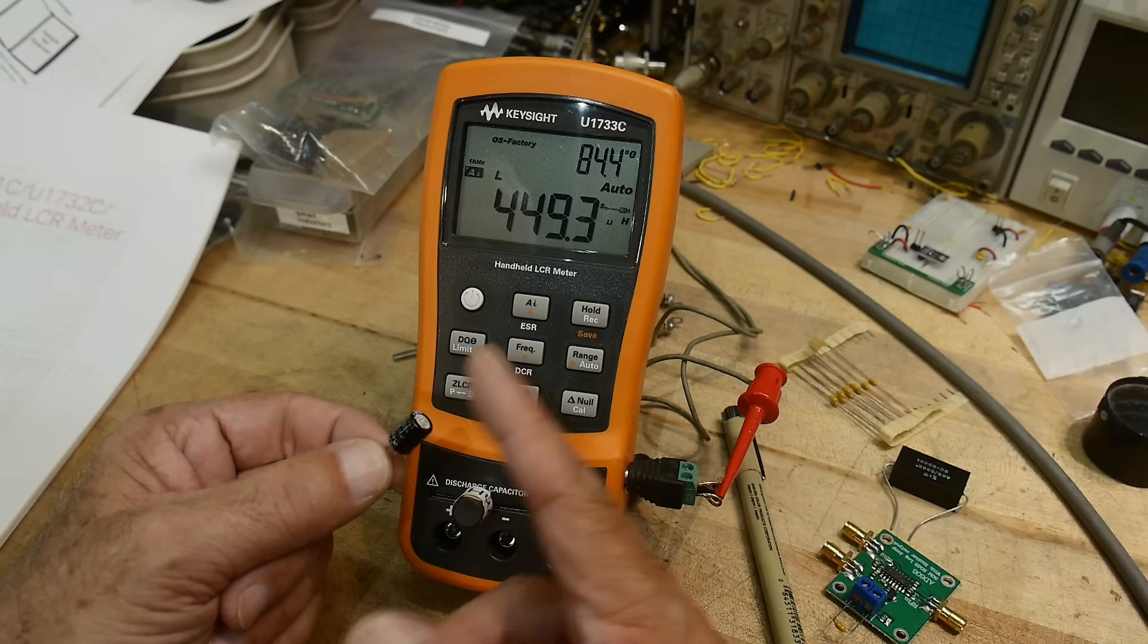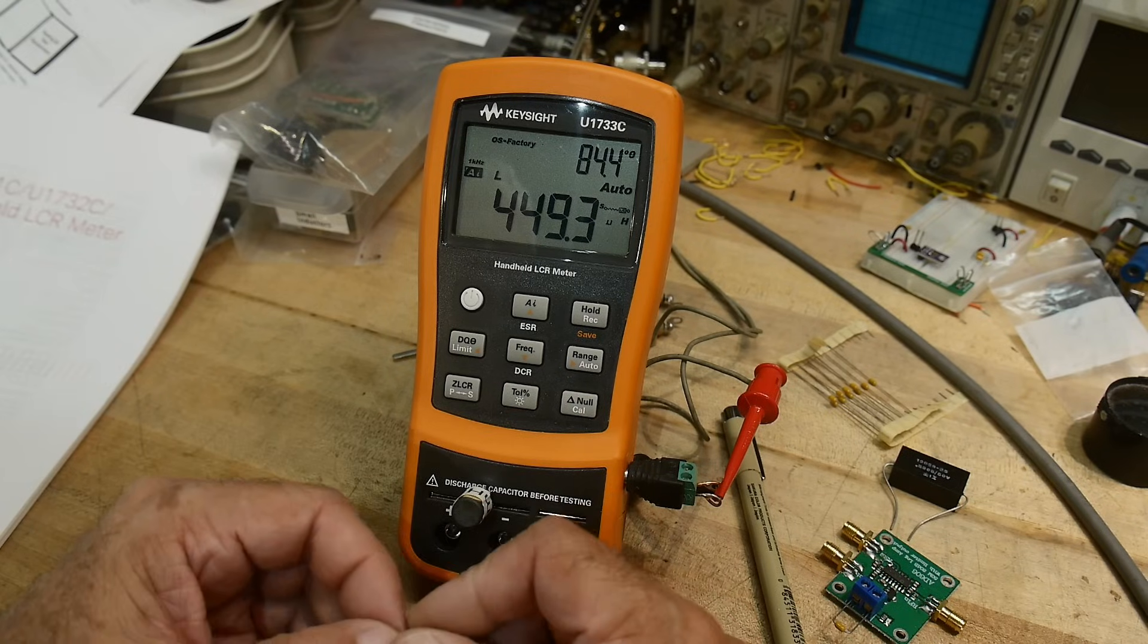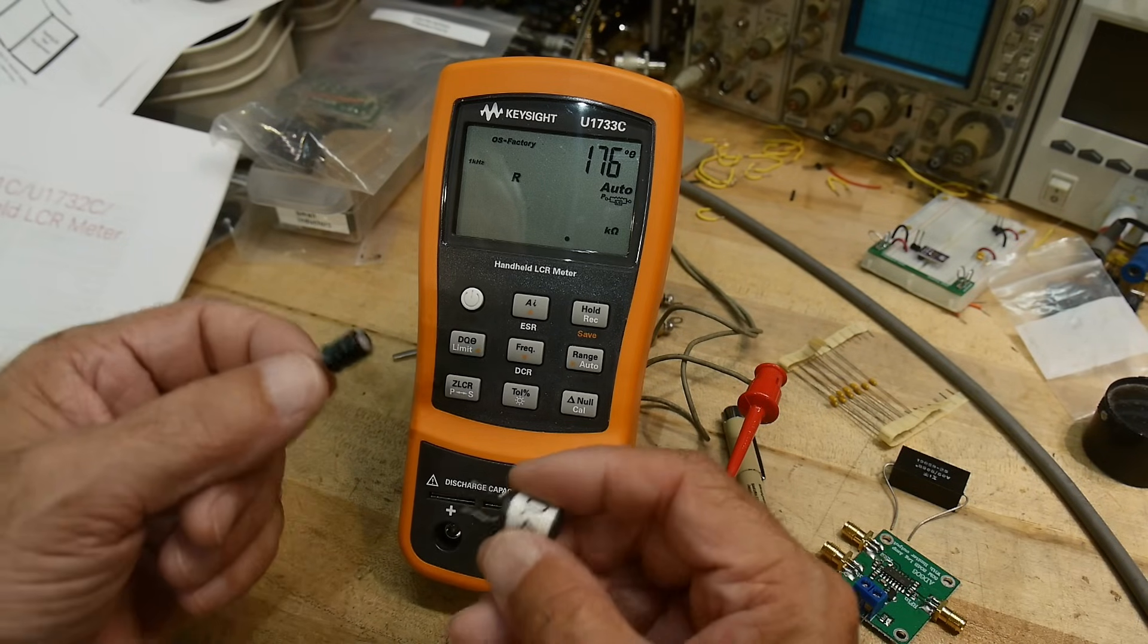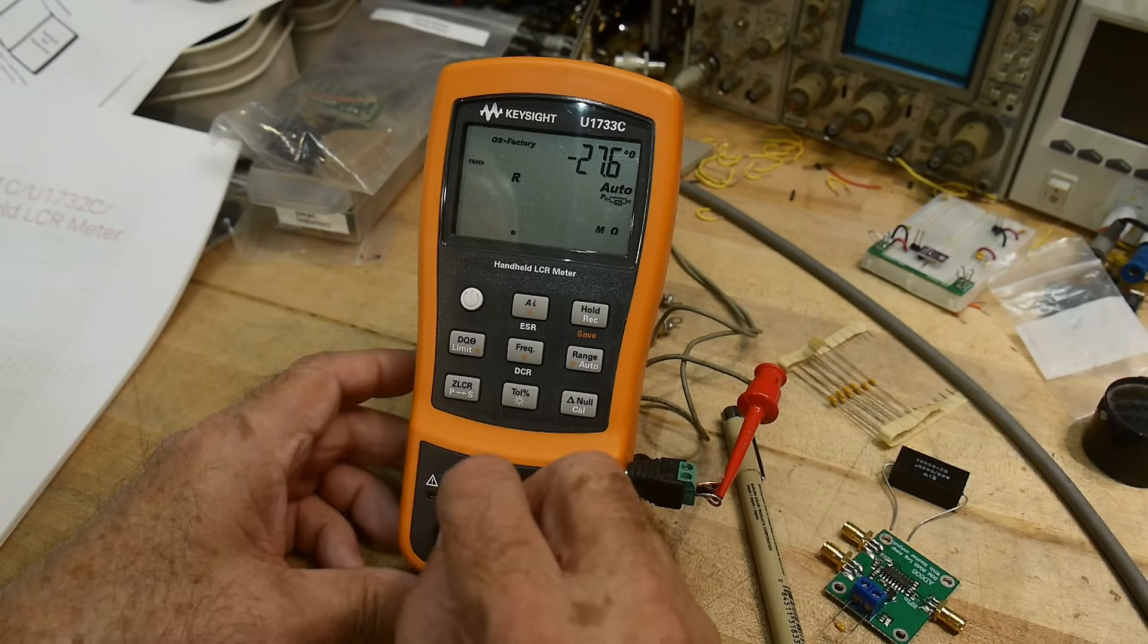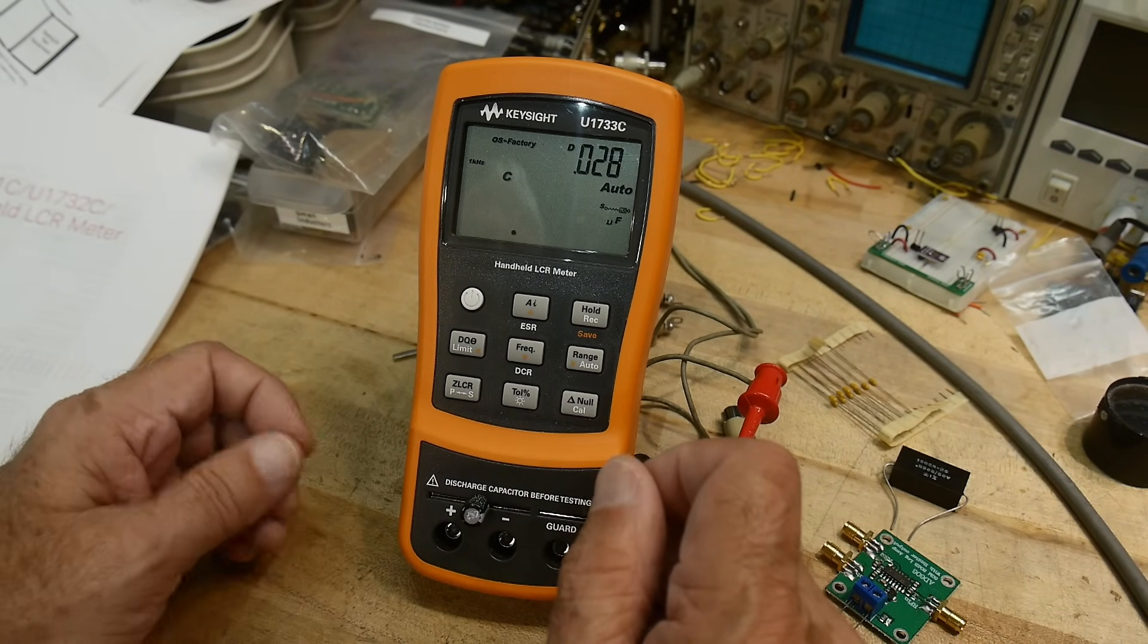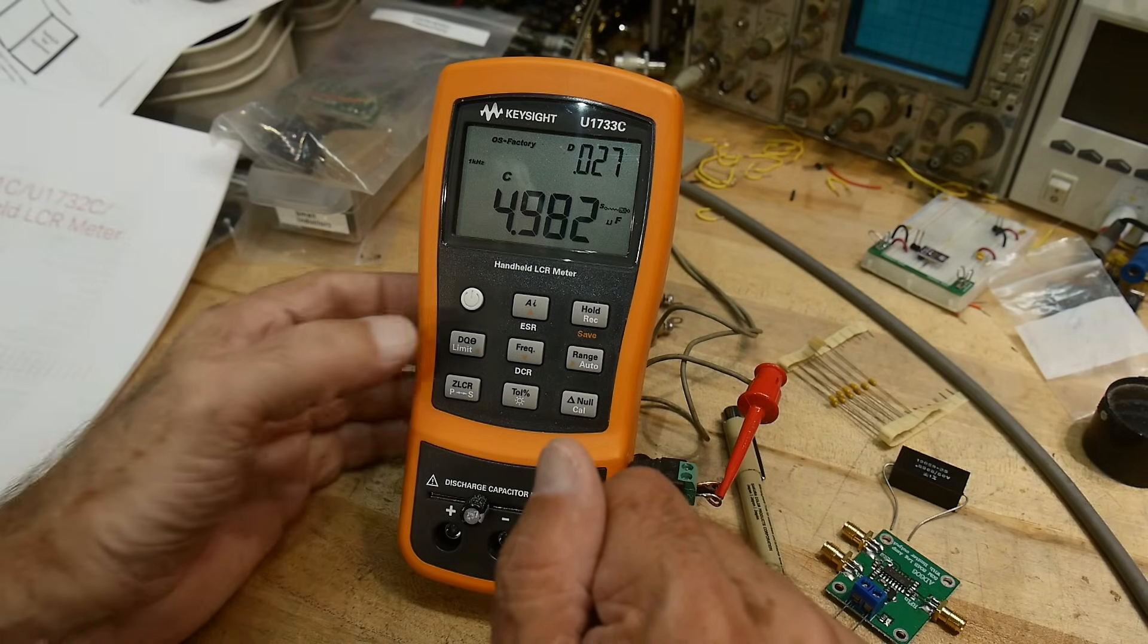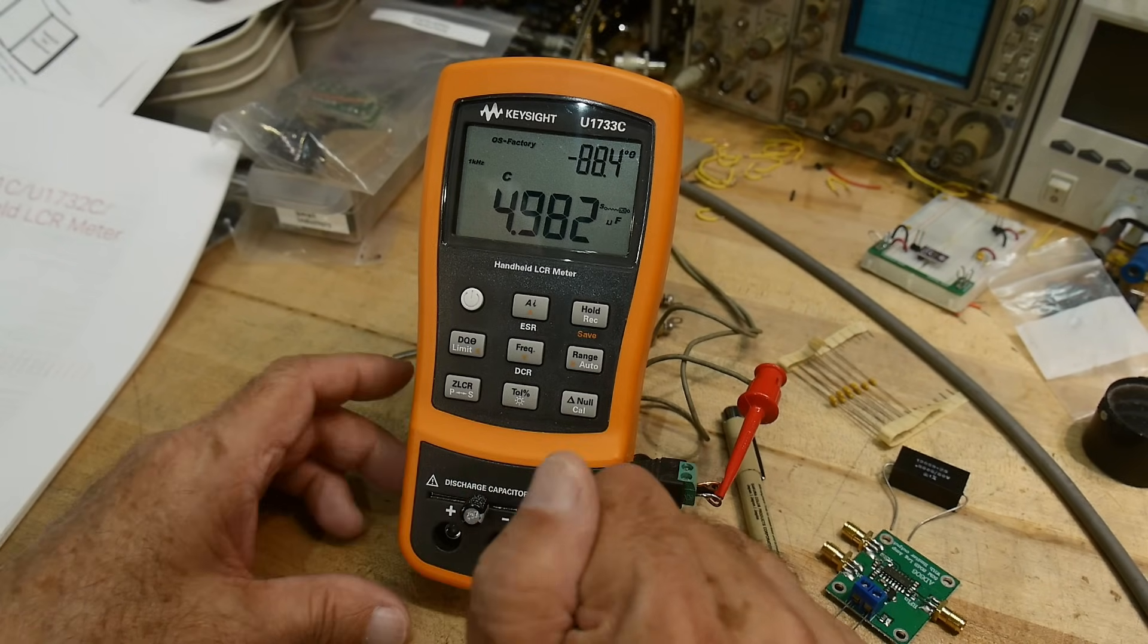So capacitors have some inductance in them. They have some resistance in them. They have dielectrics in them that aren't linear. Inductors have got resistance in them. They have stray capacitance in them. And so they act like real devices instead of perfect devices. All right. Let's put the capacitor back in. And I'll just lock it down here. We have 4.9 microfarads. All right. So let's go back to theta. We have 88.4 degrees.